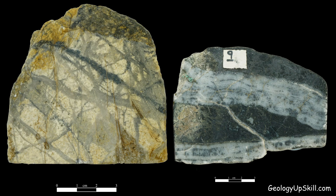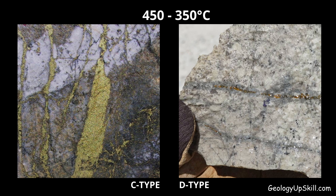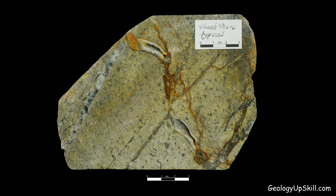Quartz is the dominant mineral in A- and B-type veins, representing fluids in the range of about 600 to 450 degrees C. Quartz goes missing during the deposition of C- and early D-type veins, which represent the peak ore stage in most porphyry systems, with fluids between about 450 and 350 degrees C. That's because silica solubility goes back up as temperature declines through that window. Quartz returns as silica solubility begins to fall again below about 350 degrees C, becoming the dominant mineral again in the later, more peripheral D-type veins.